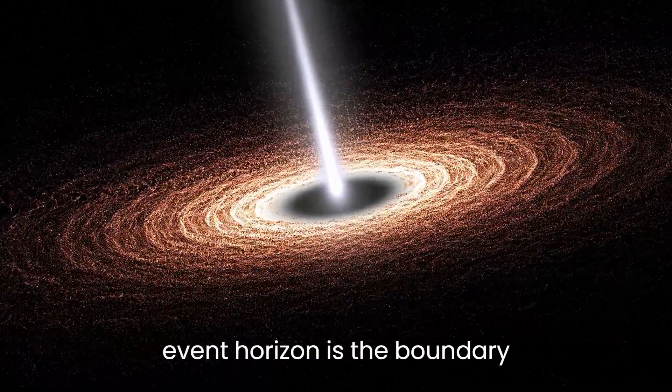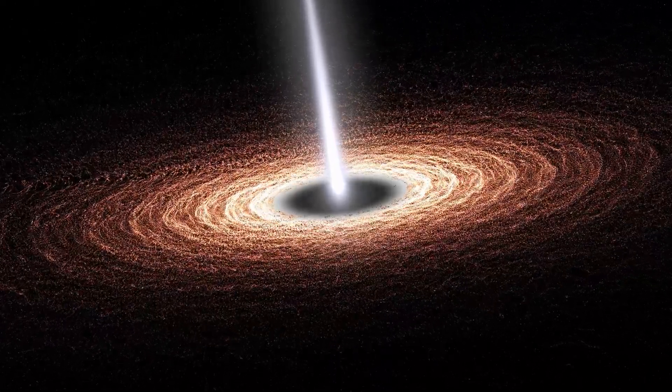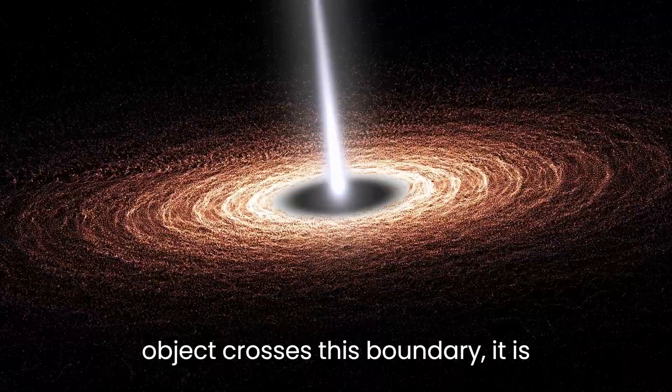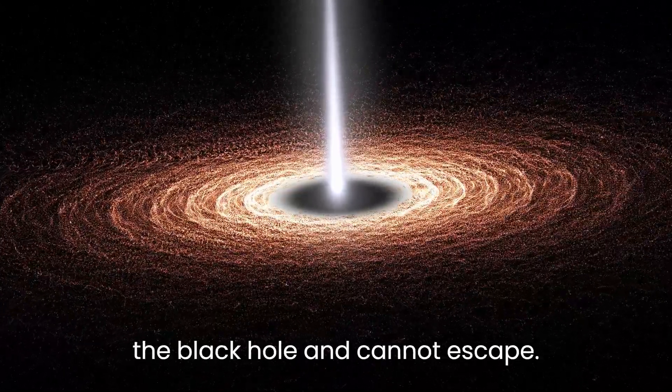The event horizon is the boundary surrounding a black hole that marks the point of no return. Once an object crosses this boundary, it is trapped within the gravitational pull of the black hole and cannot escape.